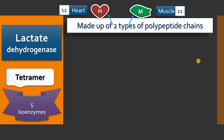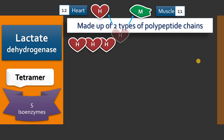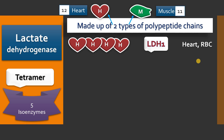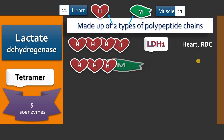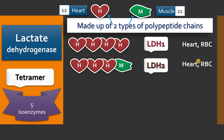These two polypeptide chains arrange to form five isoenzymes. Four H-type polypeptides combine to form the first isoenzyme, LDH1, which is predominantly present in the heart and RBCs. When three H subunits combine with one M subunit, this tetramer forms LDH2, again predominantly present in the heart and RBCs.